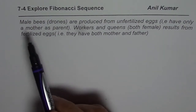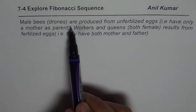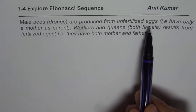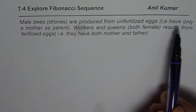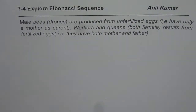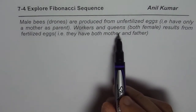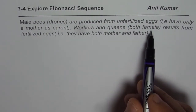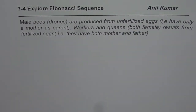As you know, male bees, which are drones, are produced from unfertilized eggs. That means they have only a mother as their parent. However, the worker and the queen bees, which are both female, result from fertilized eggs. That means they have both a mother and a father.